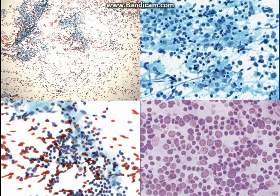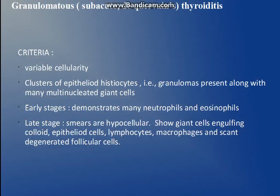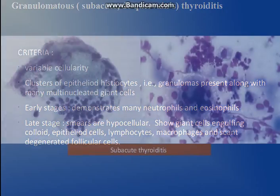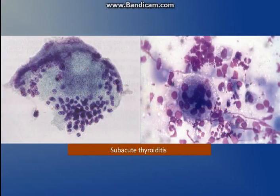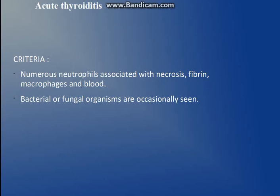This picture shows lymphocytes and follicular cells intermixed. Then granulomatous thyroiditis — these categories also go into benign category 2. In this there is variable cellularity, epithelioid histiocytes are present, granuloma cells are present, and giant cells can be seen. This picture shows a giant cell. For acute thyroiditis, which also falls in the benign second category, necrosis, macrophages, blood with numerous neutrophils, and few follicular cells can be seen.